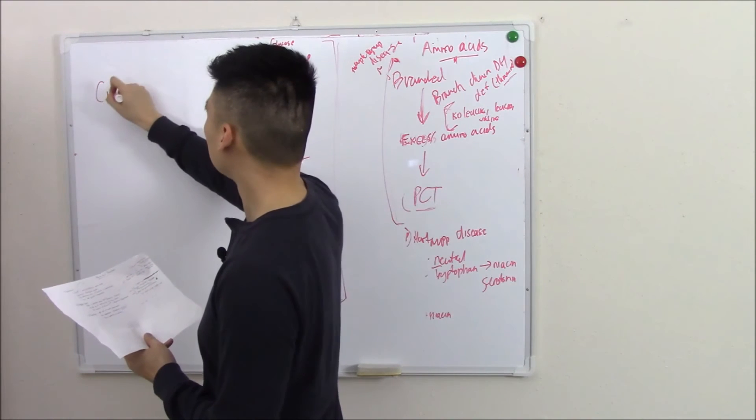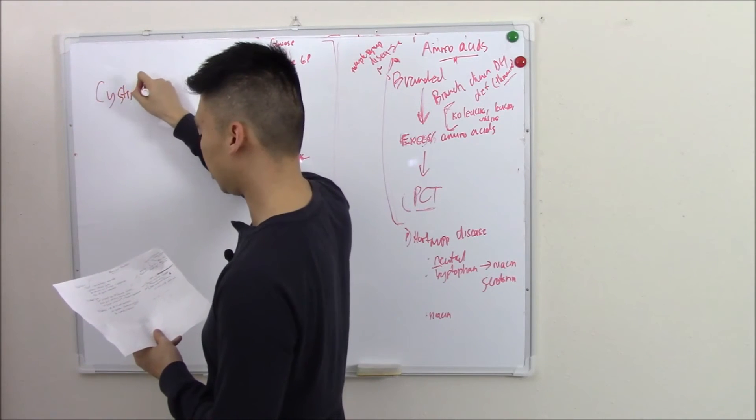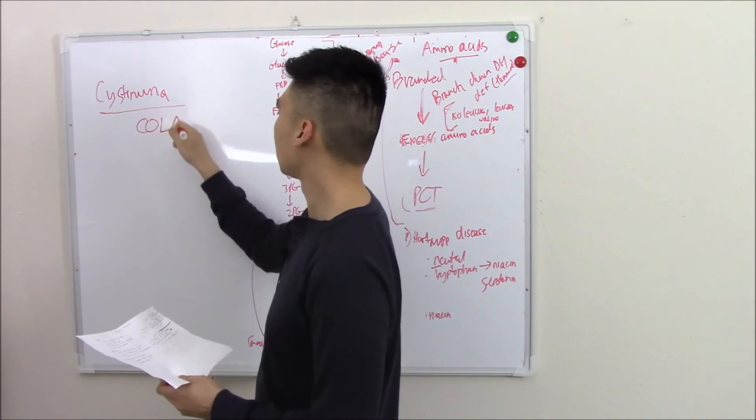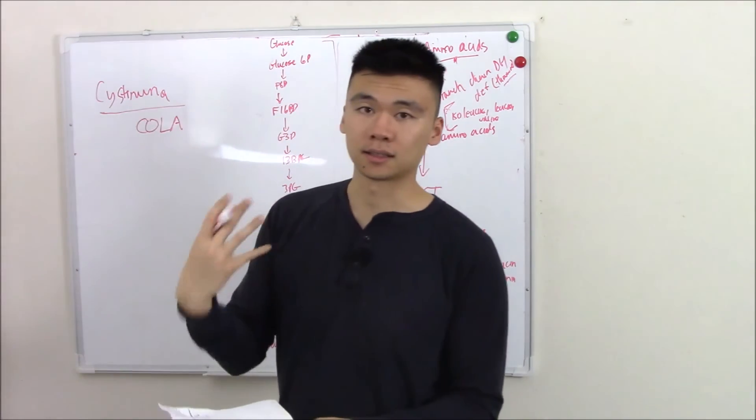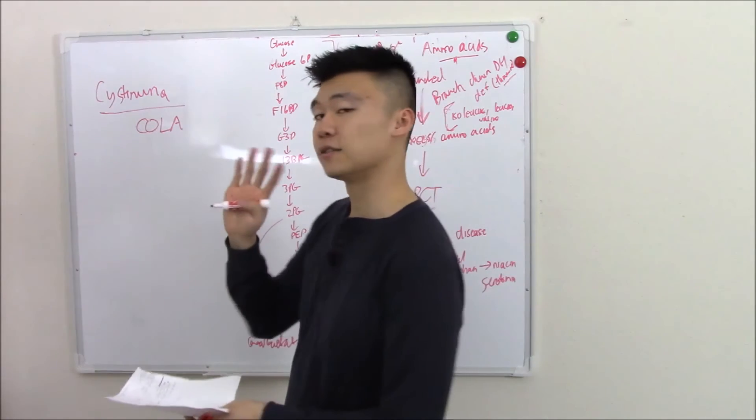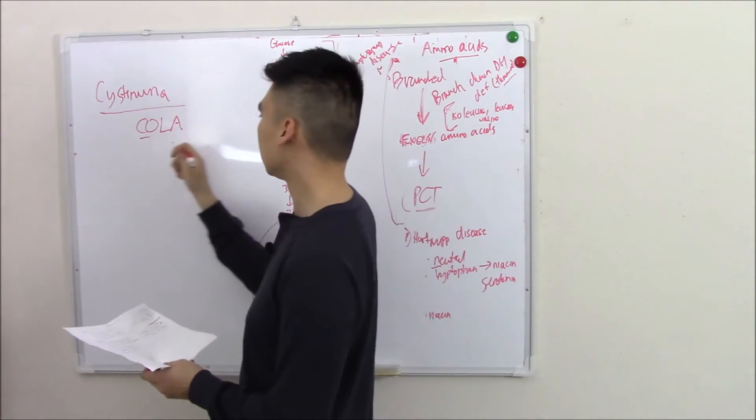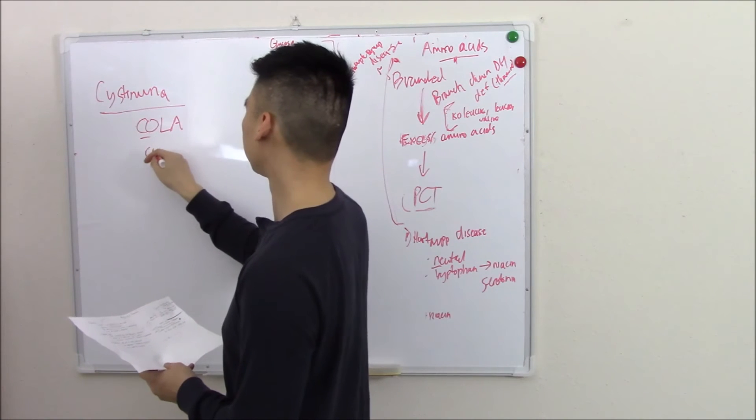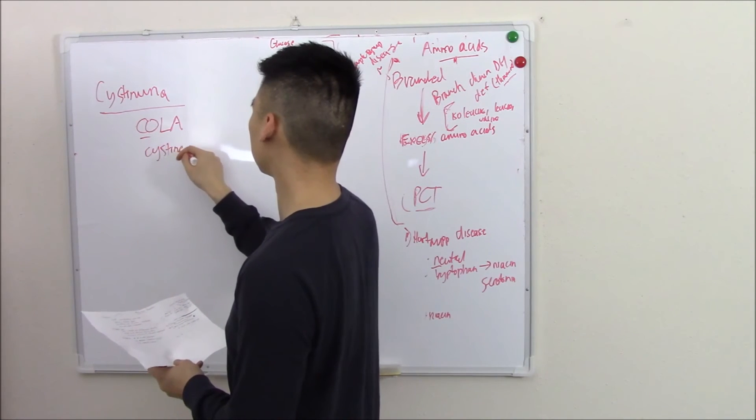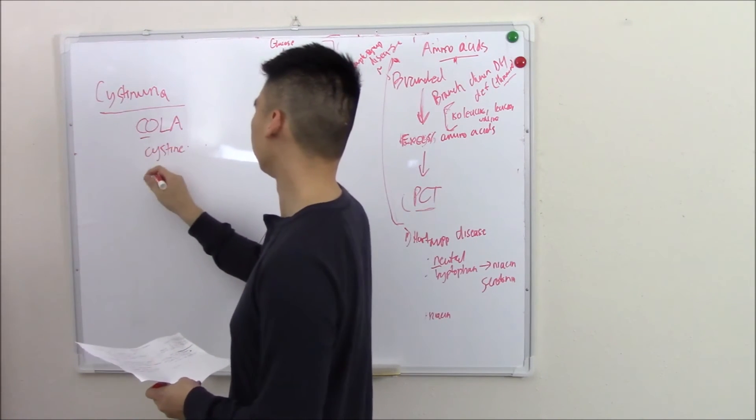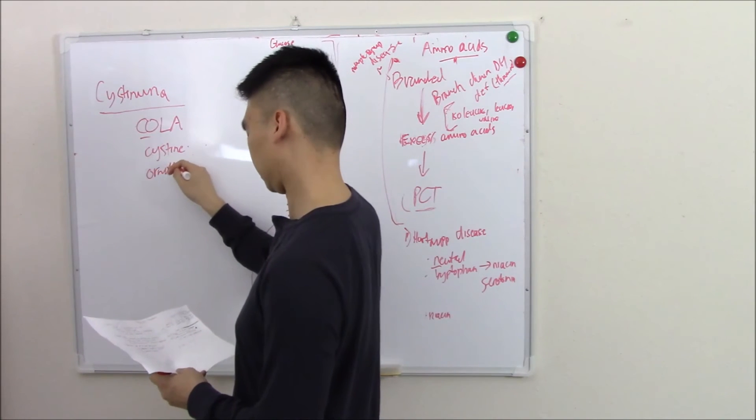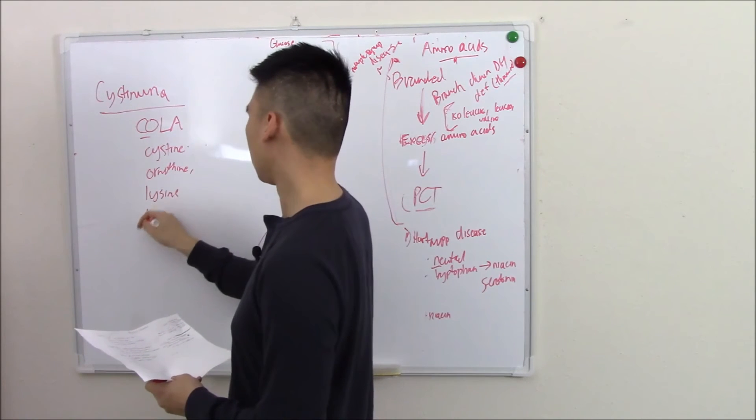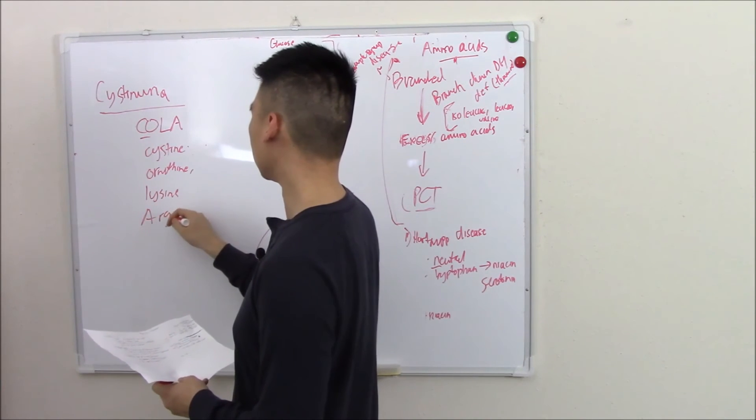Next up is cystinuria. The name cystinuria is somewhat of a misnomer. There's actually four amino acids. C stands for cysteine. O stands for ornithine. L stands for lysine. And A stands for arginine.